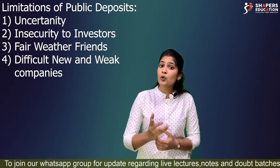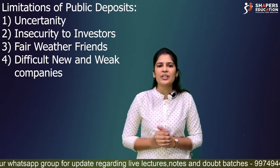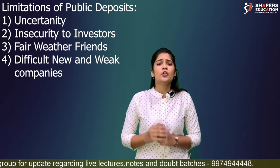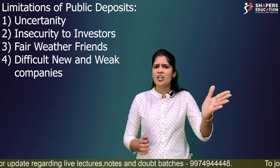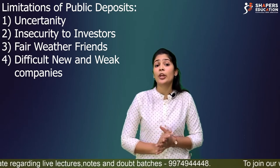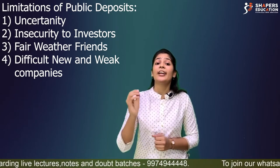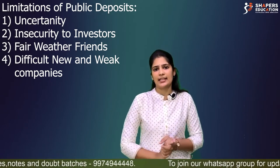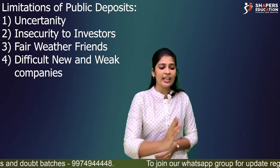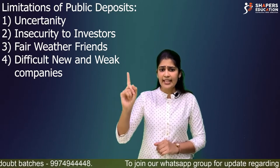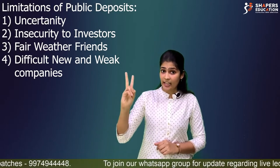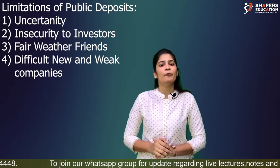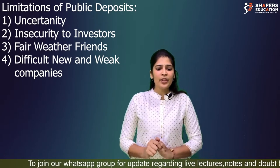The fourth limitation is that public deposits are difficult for new and weak companies. People do not readily deposit in new or weak companies — they look at track record. So the limitations of public deposits are: uncertainty, insecurity to investors, fair weather friends, and difficult for new and weak companies.